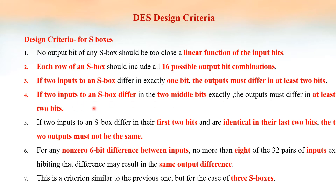The fourth criterion: if two inputs to an S box differ in their first two bits and are identical in their last two bits, the two outputs must not be the same. Sixth: for any non-zero six-bit difference between inputs, no more than eight of the 32 pairs of input exhibiting that difference may result in the same output difference.